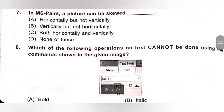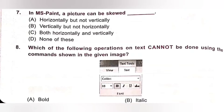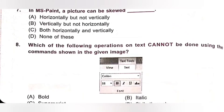Question 7: In MS Paint, a picture can be skewed — A. Horizontally but not vertically, B. Vertically but not horizontally, C. Both horizontally and vertically, D. None of these. In MS Paint, a picture can be skewed both horizontally and vertically. Option C is the correct answer.